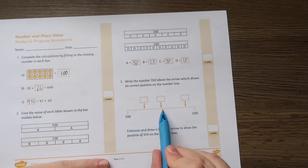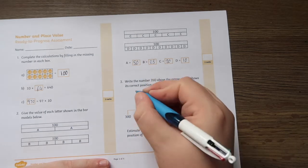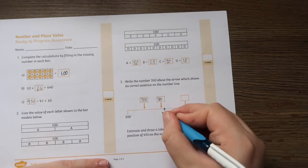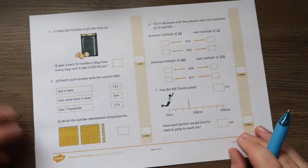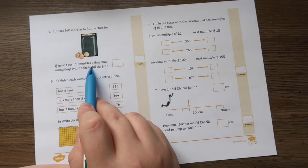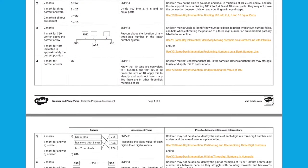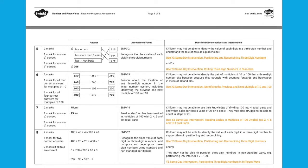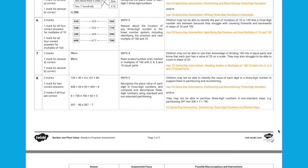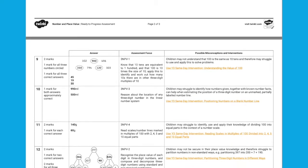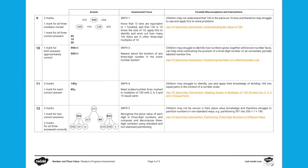By using this assessment, teachers can identify the children's understanding of essential number and place value concepts and ensure that they are ready to move on to the content for the following year. Once again, these packs provide a detailed mark scheme which provides guidance on the possible misconceptions which may underpin any areas of weaknesses and includes links to relevant same-day interventions designed to target specific concepts in engaging ways.